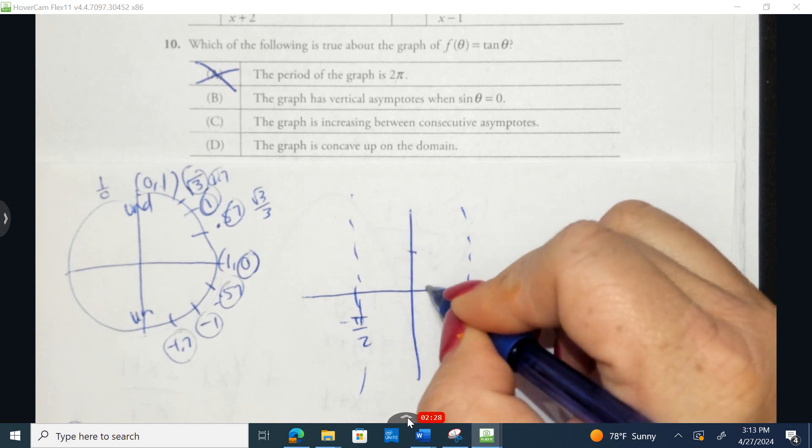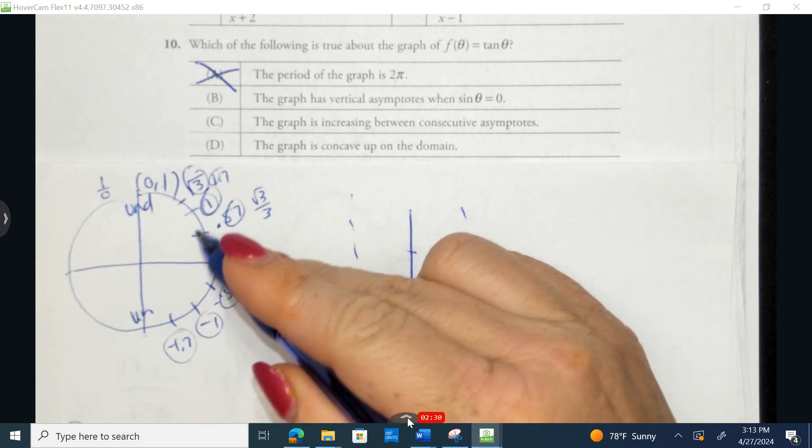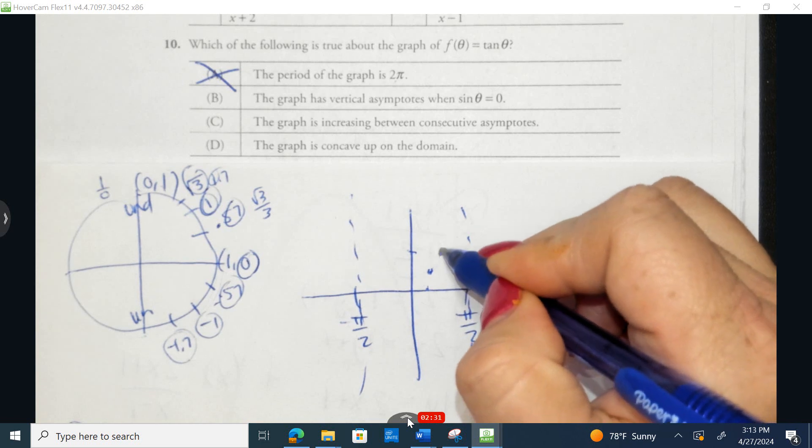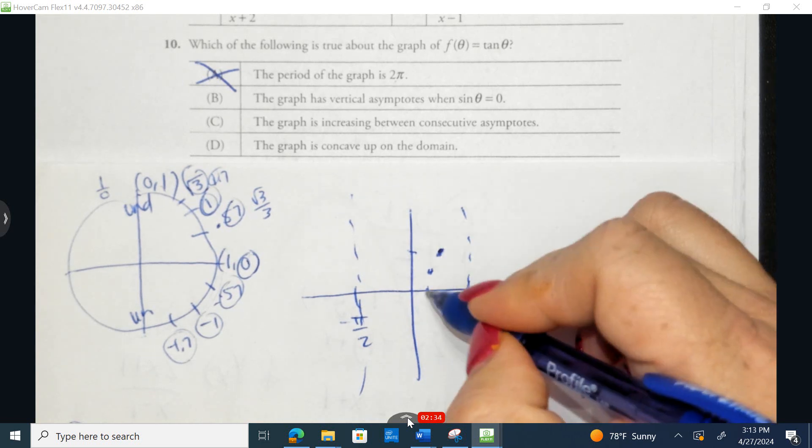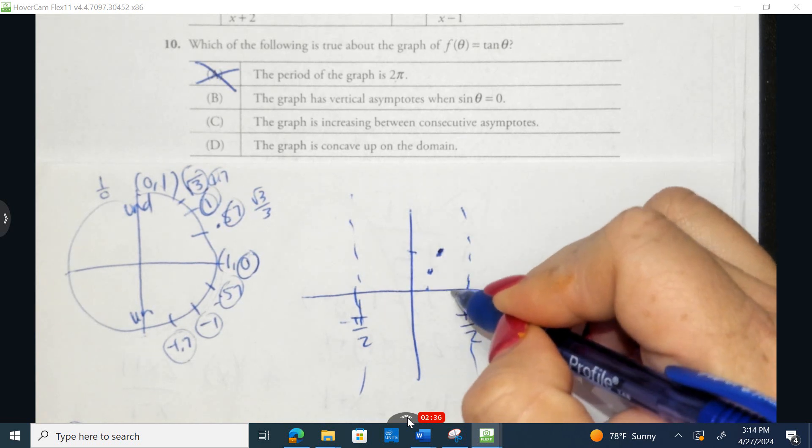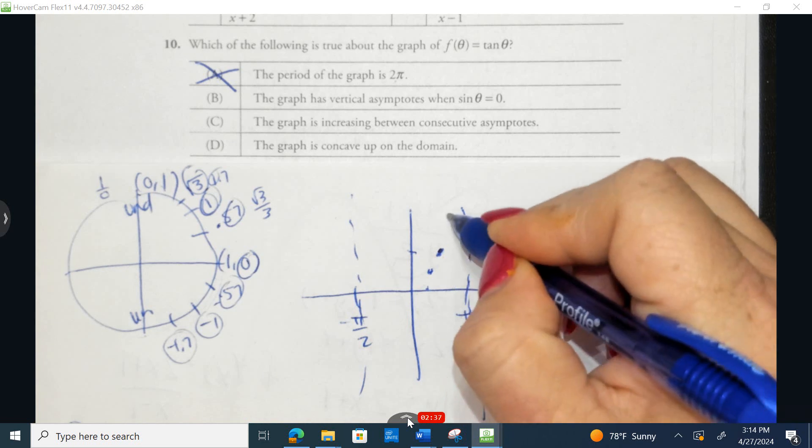Now at 45 degrees, I'd be at 1, and at 60 degrees, I'd be at 1.7. So you can see it's coming in like this.